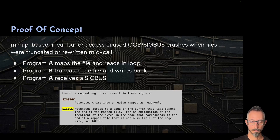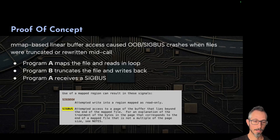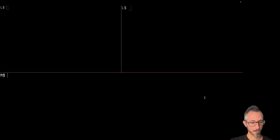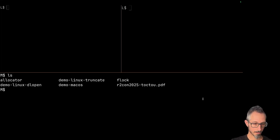We have a couple of programs. The first program is reading a file in a loop, counting all the bytes, and then counting the final result. A second program basically truncates this file while the other program is running, causing the first program to crash with a SIGBUS. You can read the man page to understand what SIGBUS is all about. Let's see how that bug works in the demo.